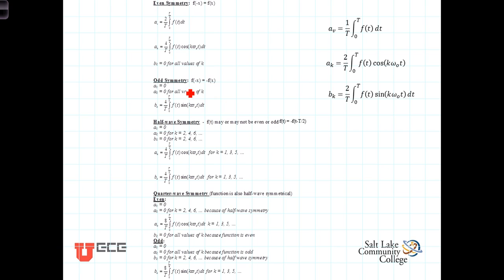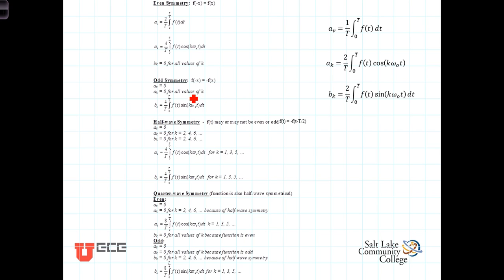If there's odd symmetry, a similar set of circumstances arise. The definition of odd symmetry is that it's symmetrical about the origin. One of the characteristics of odd symmetry is that there will be no DC component — there's just as much above the horizontal axis as there is below it. So a_v will be 0 for any function that has odd symmetry. When there's odd symmetry, the a_k's will be 0. In other words, there will be no cosine terms in the Fourier expansion of an odd-symmetric waveform.